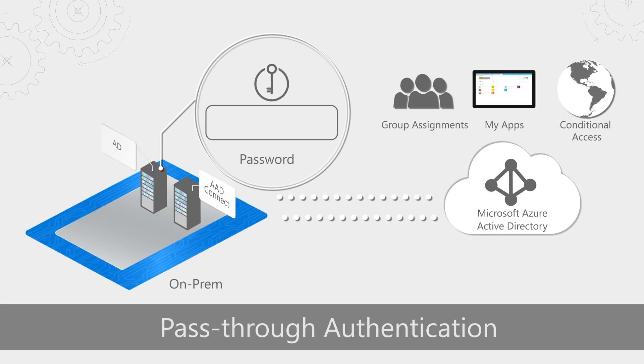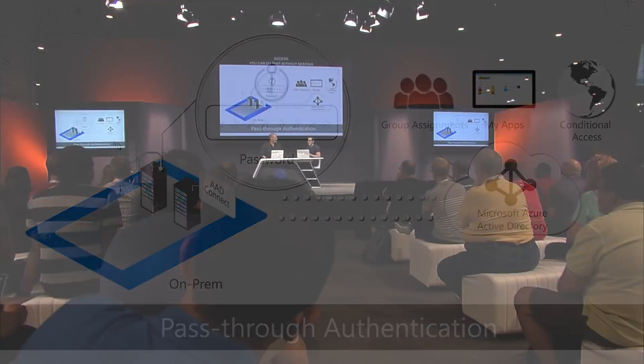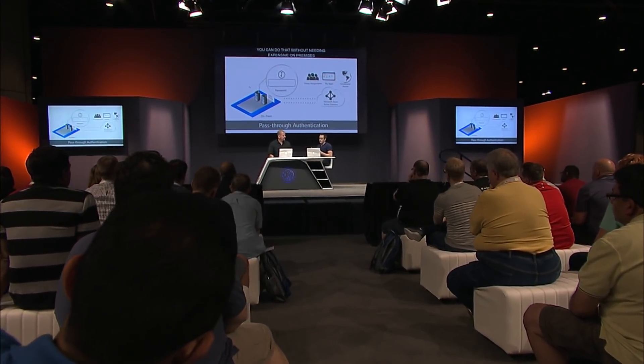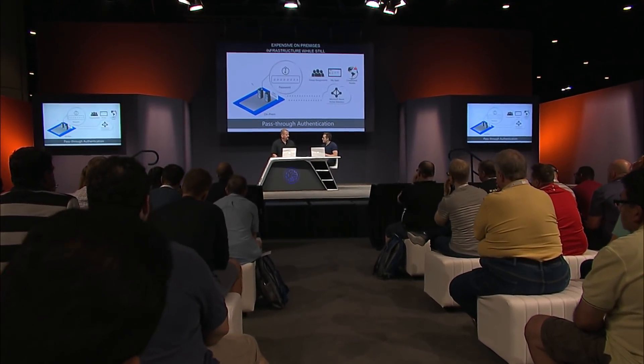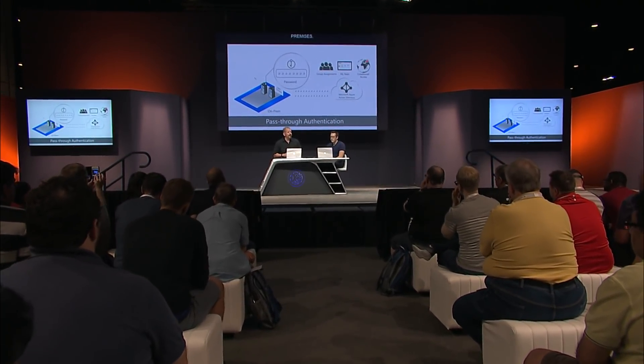Why does it actually matter to be able to do this? Your identity control plane is a really important capability. You want to be able to reach out to the cloud and control all of these different cloud apps and devices. Pass-through authentication gives you a really easy way to do that without having to run a giant ADFS server farm or anything like that on-premise.